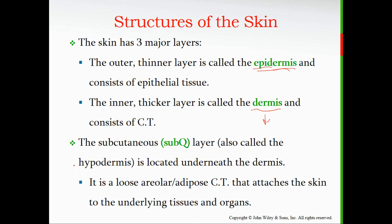The subcutaneous layer is also called the hypodermis — 'hypo' means below, so the hypodermis is the layer below the dermis. A helpful memory trick: think of a hypodermic needle, which injects medication under the skin. The subcutaneous layer is made up of loose areolar tissue and a mixture of adipose connective tissue, which attaches the skin to the underlying tissues and organs — mostly the underlying muscle.